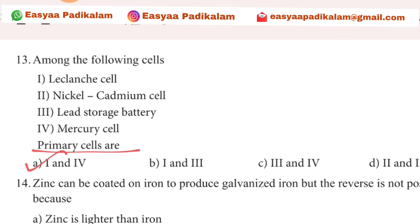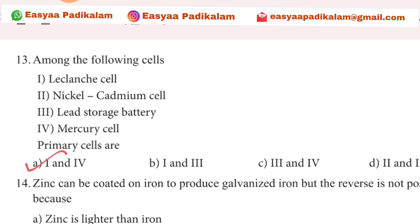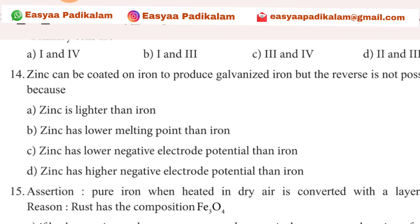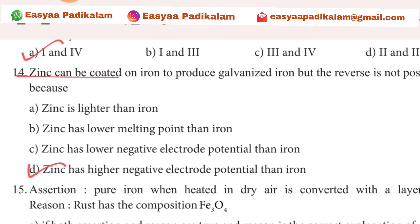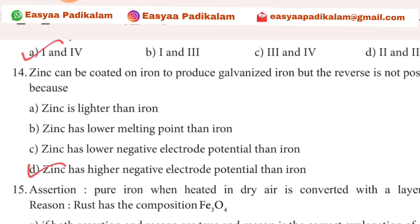Thirteenth question: among the following cells, primary cells. If you use LEC — L, E, C — when you are in primary, you will have L, E, C. Zinc can be coated. Zinc is Z. Z is A to Z. Z is highest, A is lowest. Z has a higher negative electrode.